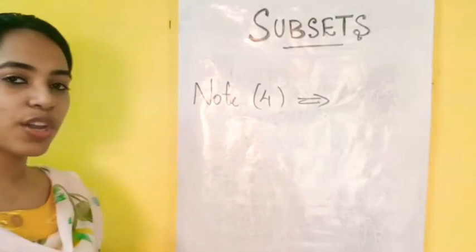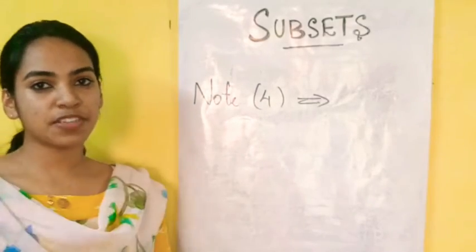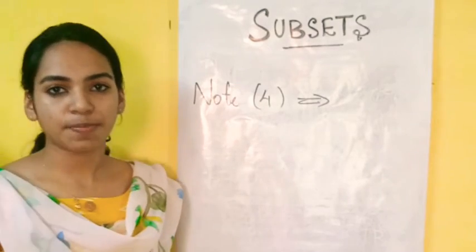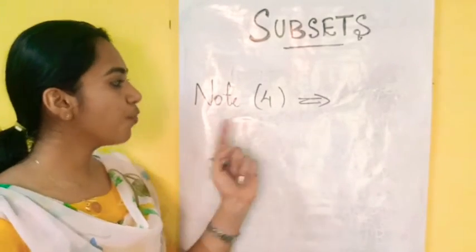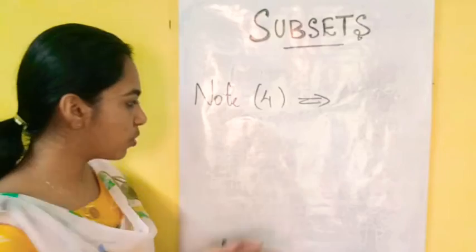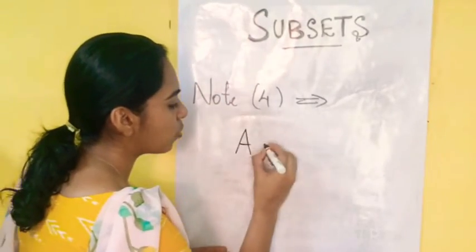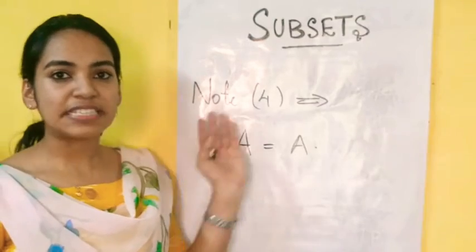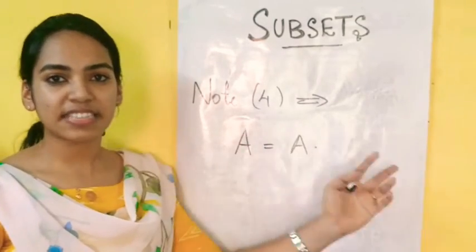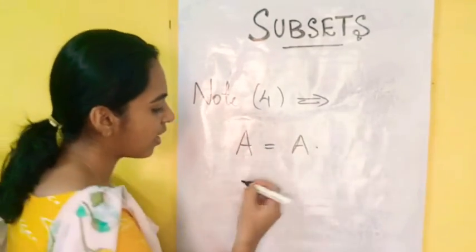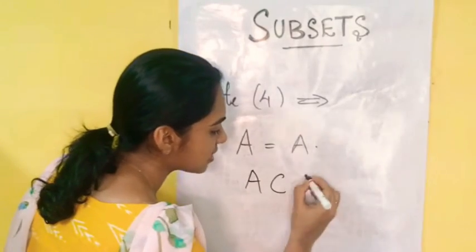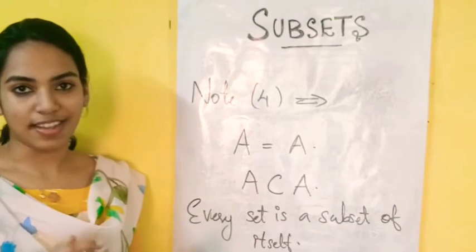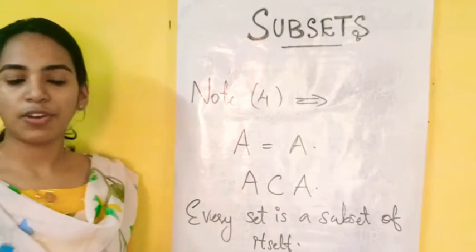I have a point: every set is a subset of itself. If you take any set, you can take any subset of that set — it implies that A is equal to A. The first set is a subset of A. We conclude that every set is a subset of itself.